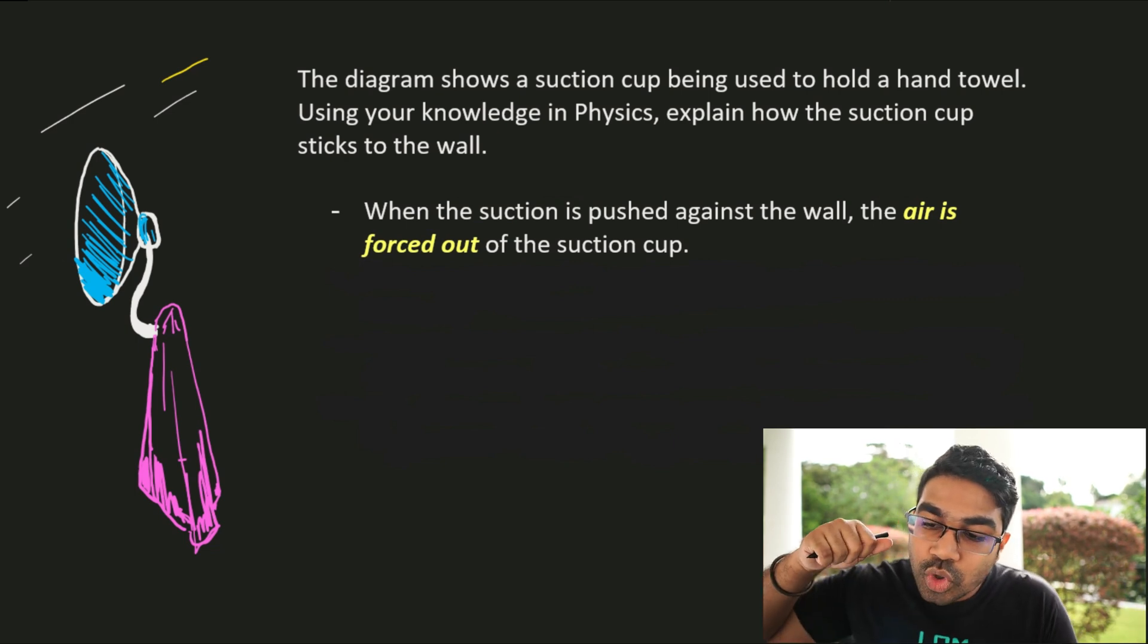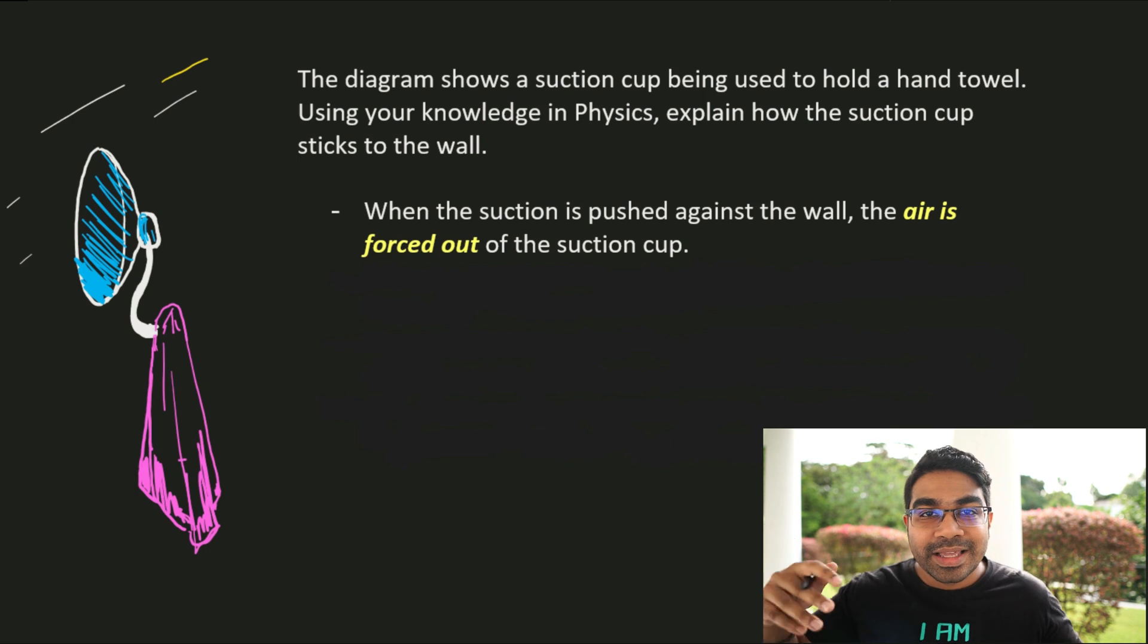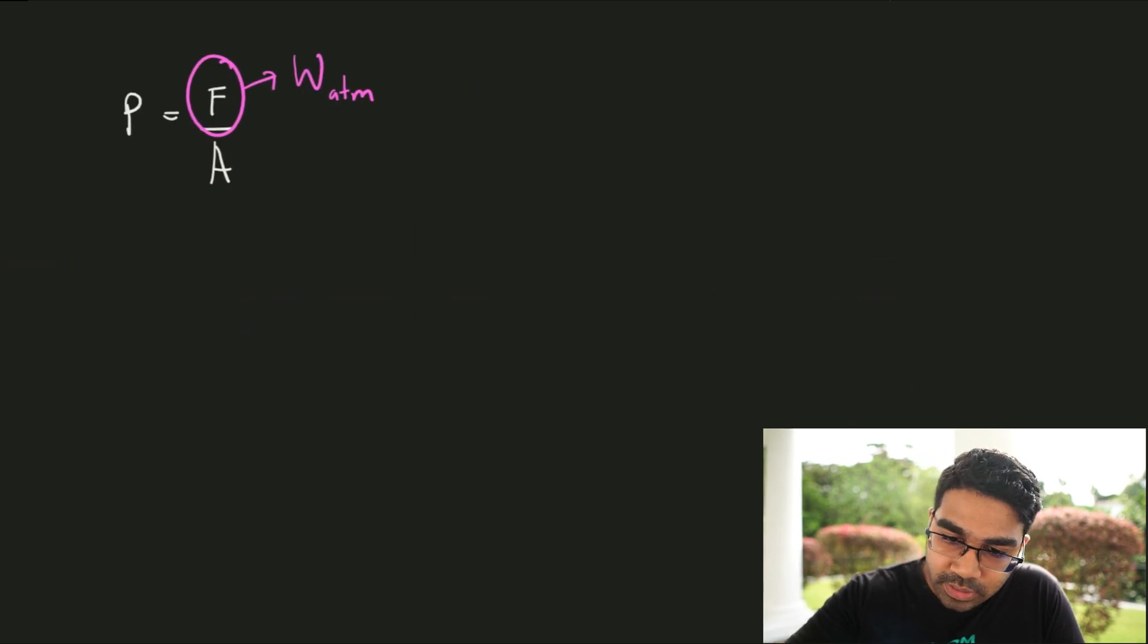So when the suction cup is pushed against the wall, what happens is the air in the suction cup is forced out. Let's see what that looks like. At first, this is the wall surface. And let's say this is the suction cup.